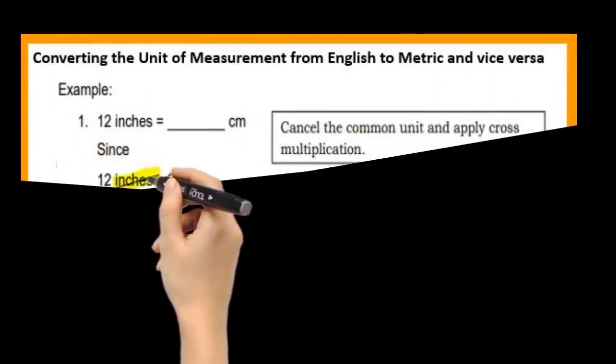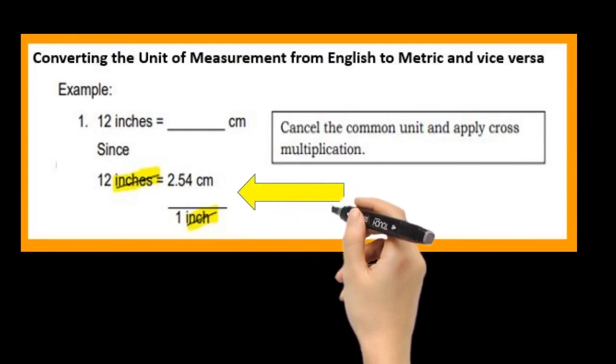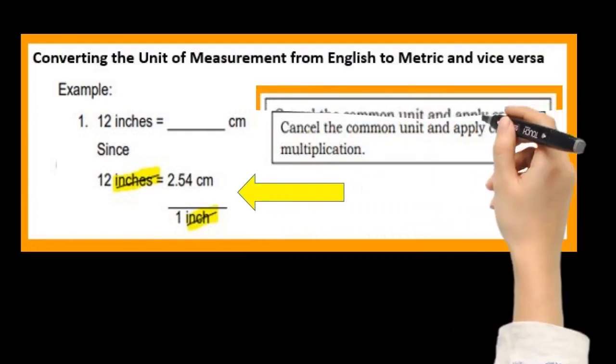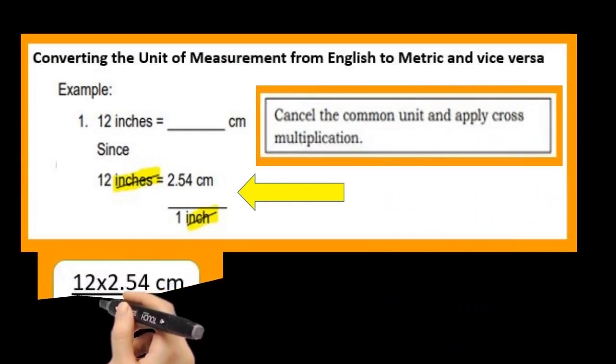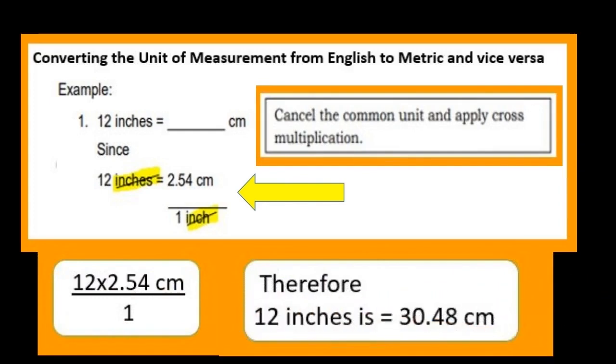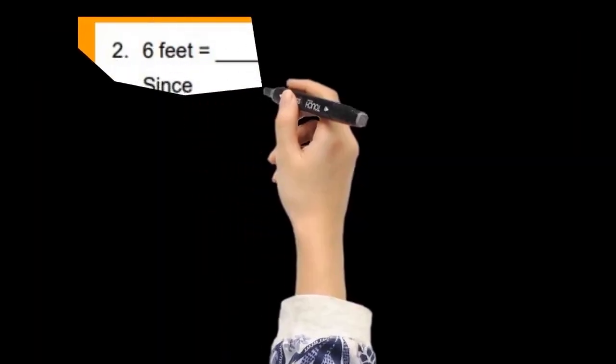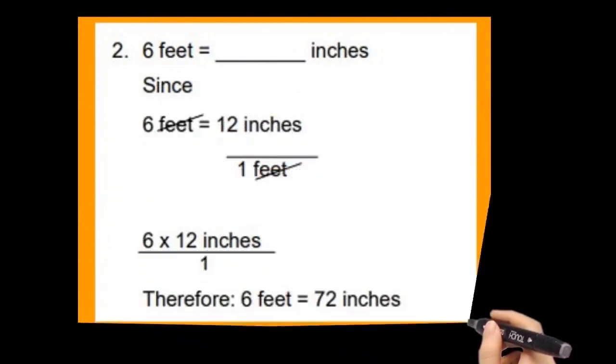For example, number one: 12 inches is equal to how many centimeters? To compute, cancel the common unit and apply cross multiplication, so it will become 12 times 2.54. Therefore, 12 inches is equal to 30.48 centimeters.